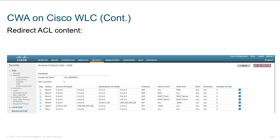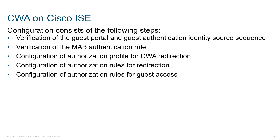Here's what a redirect ACL may look like. When we talk about redirection, we're telling the wireless LAN controller: when you see traffic going from this source to this destination, steer it into our ICE server and have it land within that portal. We give it an intuitive name — CWA redirect — and here we can classify the traffic that should be steered into that portal.